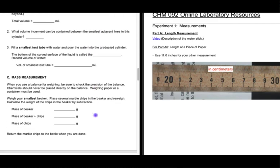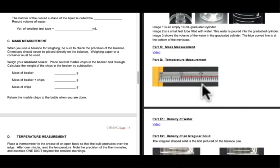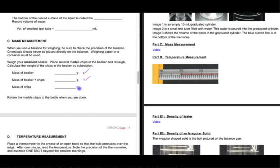The volume measurement I've already covered. For mass measurement, there's just a video — short little videos showing the proper way to use the balance, closing the doors, zeroing out the balance, that kind of thing. When you watch these videos, you're going to be recording two masses, then subtracting those two values to get the mass of the marble chips in the video. You can pause the video to record the value, then continue playing.